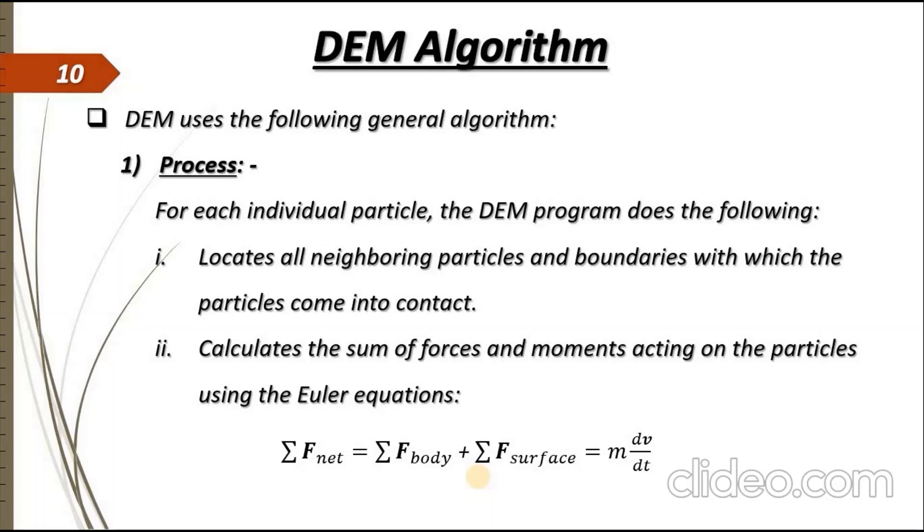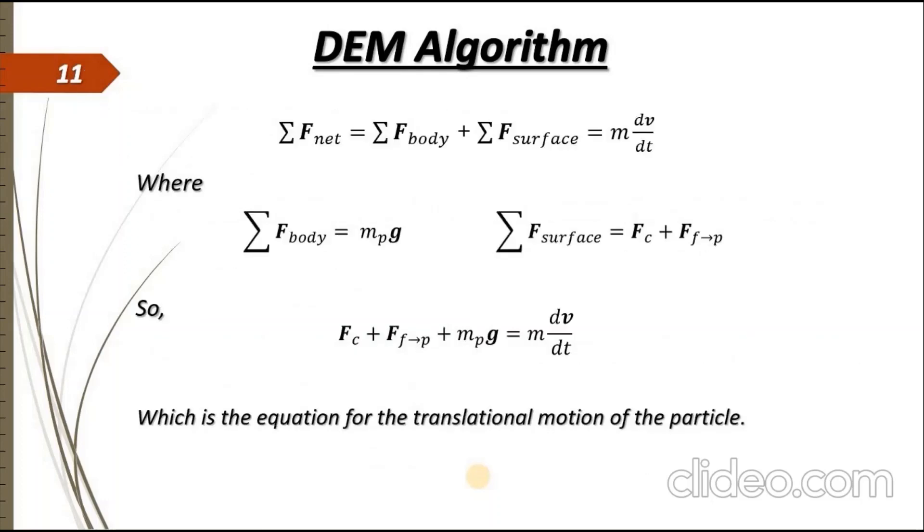Given by this simple equation, which is the summation of the body forces and the surface forces. Now the body force is obviously the gravitational force, while the surface forces include the contact forces plus the fluid-particle interaction forces. Putting these equations into the first equation, we get the final equation, which is the equation used for the calculation of the translational motion of the particle.